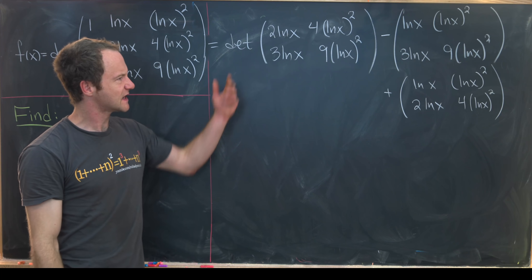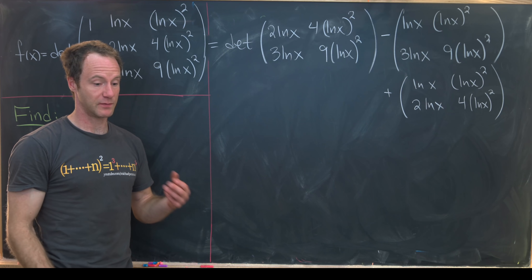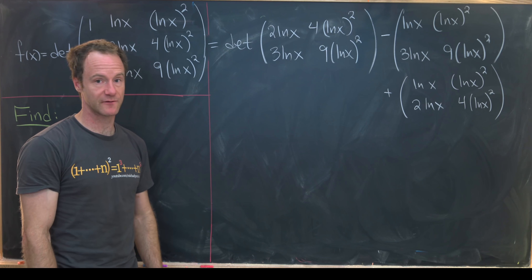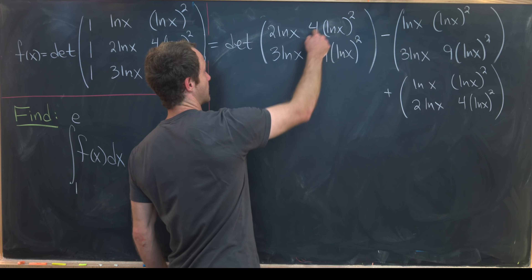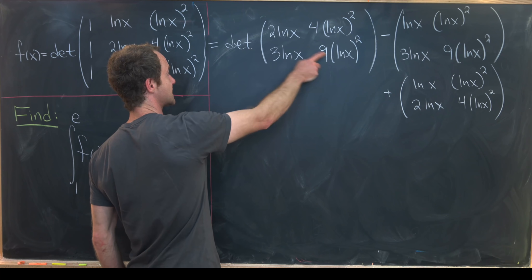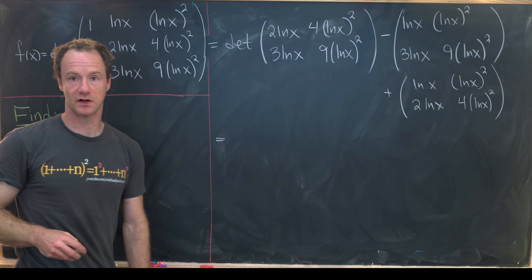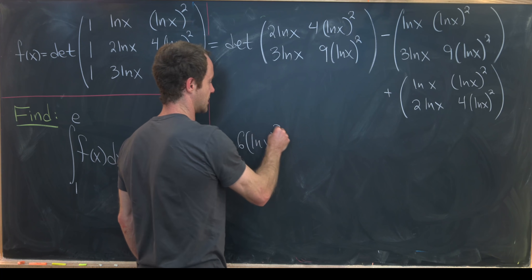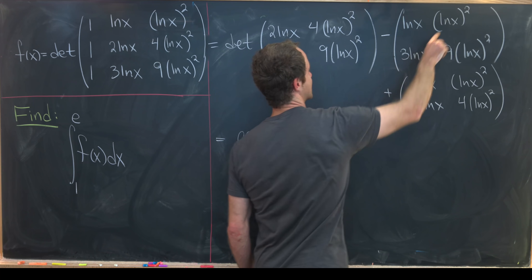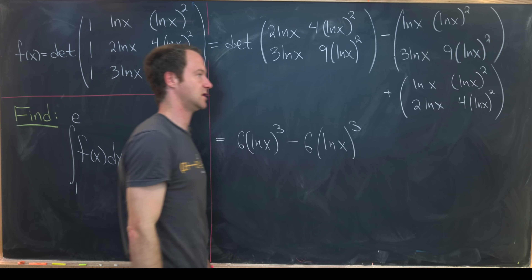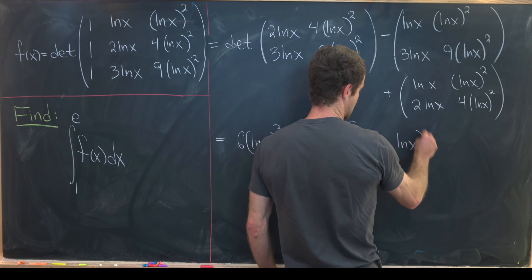Using the fact that a 2 by 2 determinant is the product of the diagonals minus the product of the off-diagonals: the first gives 18(ln x)³ − 12(ln x)³; the second gives 9(ln x)³ − 3(ln x)³ = 6(ln x)³; and the third gives 4(ln x)³ − 2(ln x)³ = 2(ln x)³.